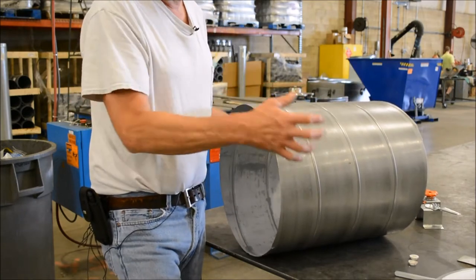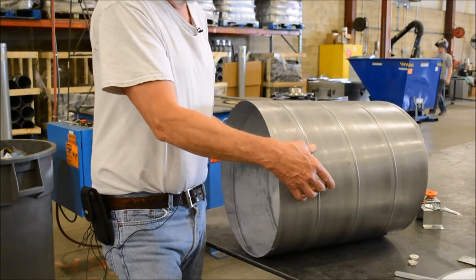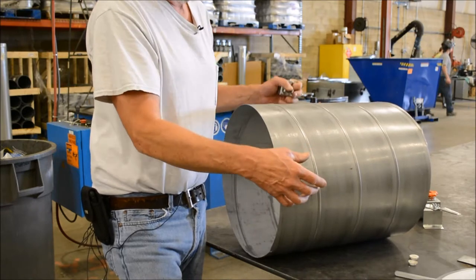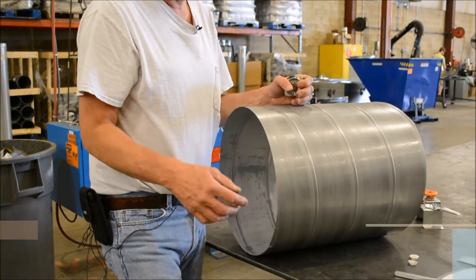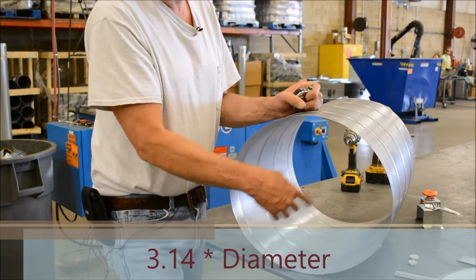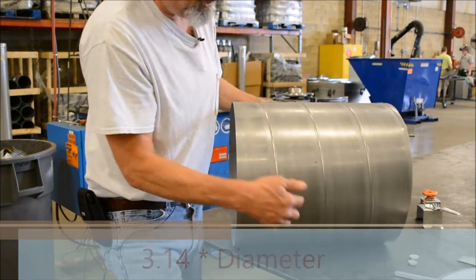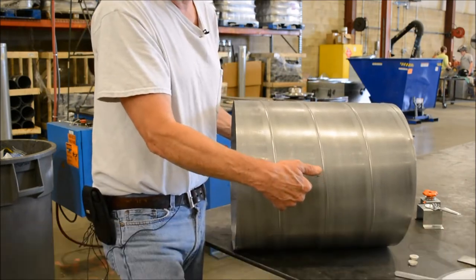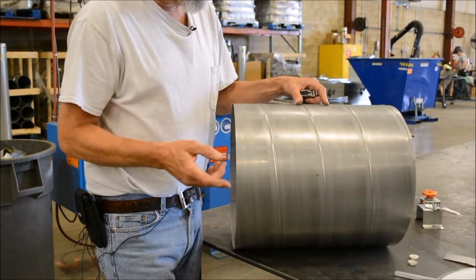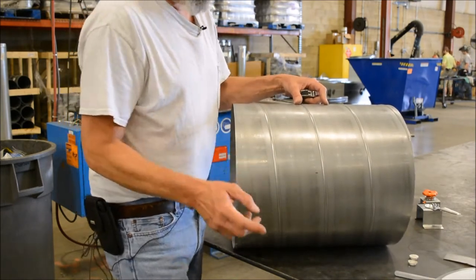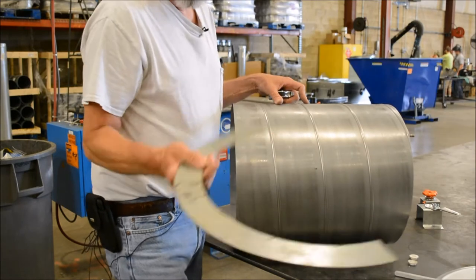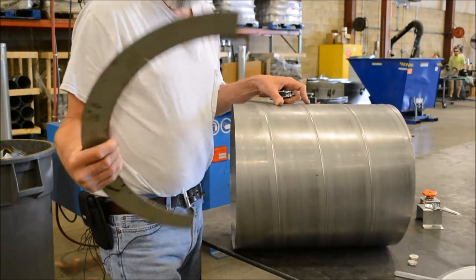the circumference of our pipe, which we do by using 3.14 times the diameter, and then we can find our center mark for our rod. What we do is we have made a half moon